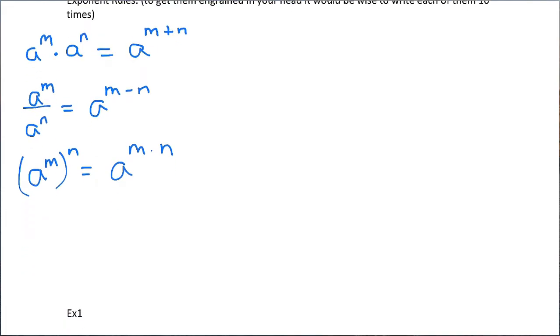Now, if we have more than one thing in there, so let's say we have b to the p, and I know I'm just using a lot of letters, but that's because it's better than if I use numbers, a to the m, and then that's raised to the n power. What we do is we bring it through to both of them. So this would be b to the p times n times a to the m times n. So you bring it through to both of those.